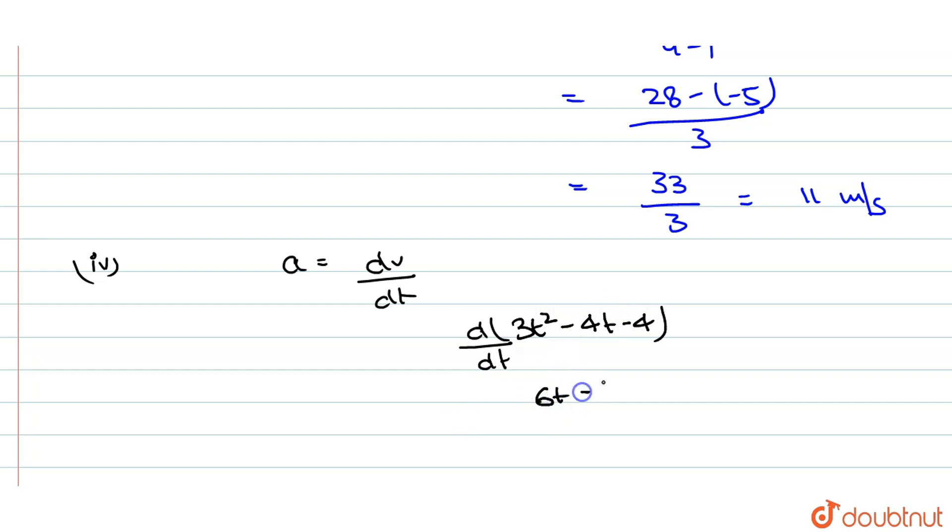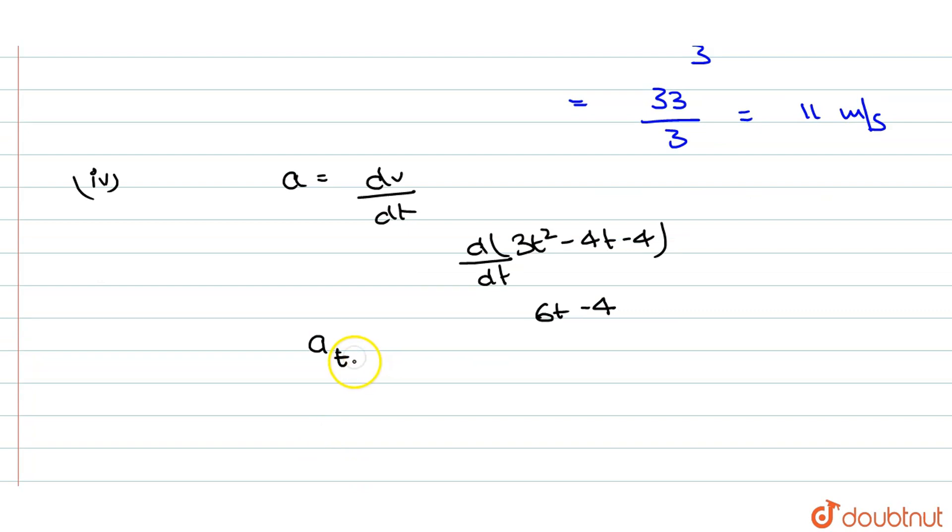Now we have acceleration at t equals 4. 6 into 4 minus 4, that is 24 minus 4, is equal to 20 meters per second square. Thank you.